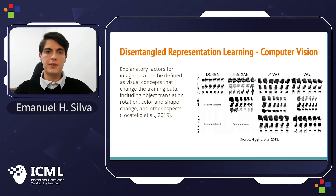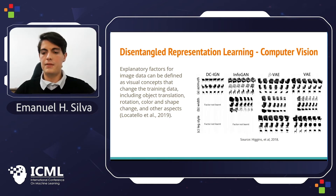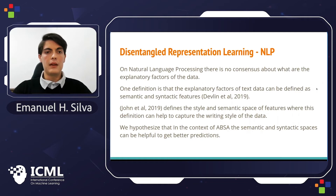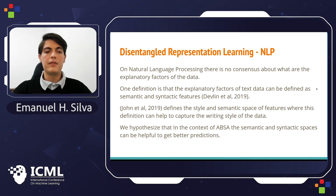Explanatory factors for image data can be defined as visual concepts that change the data, including object translation, rotation, color, and shape change, and other aspects. On natural language processing, there is no consensus about what the explanatory factors of the data are.